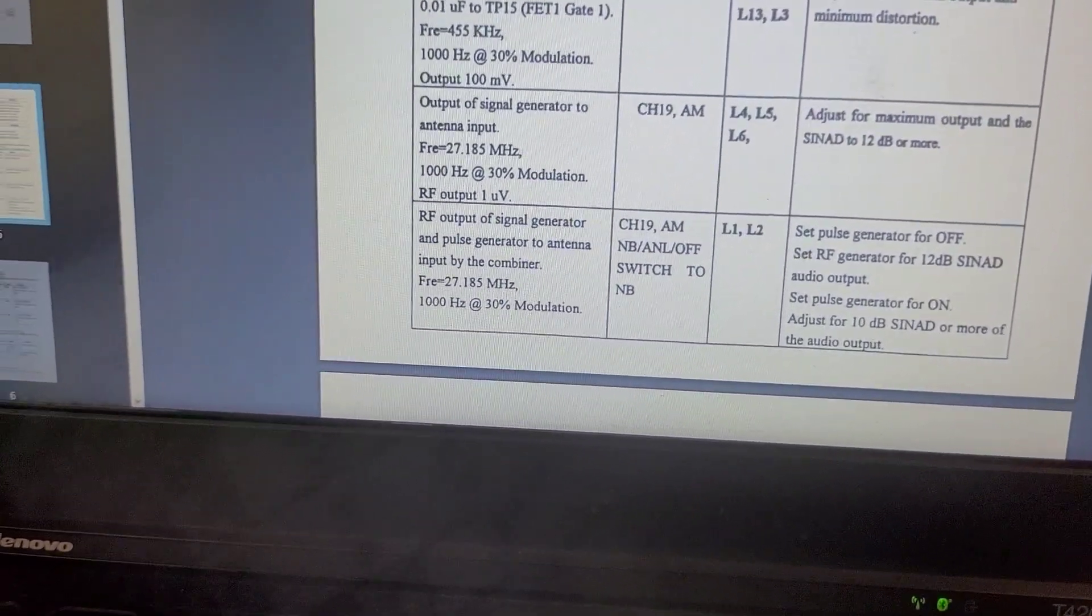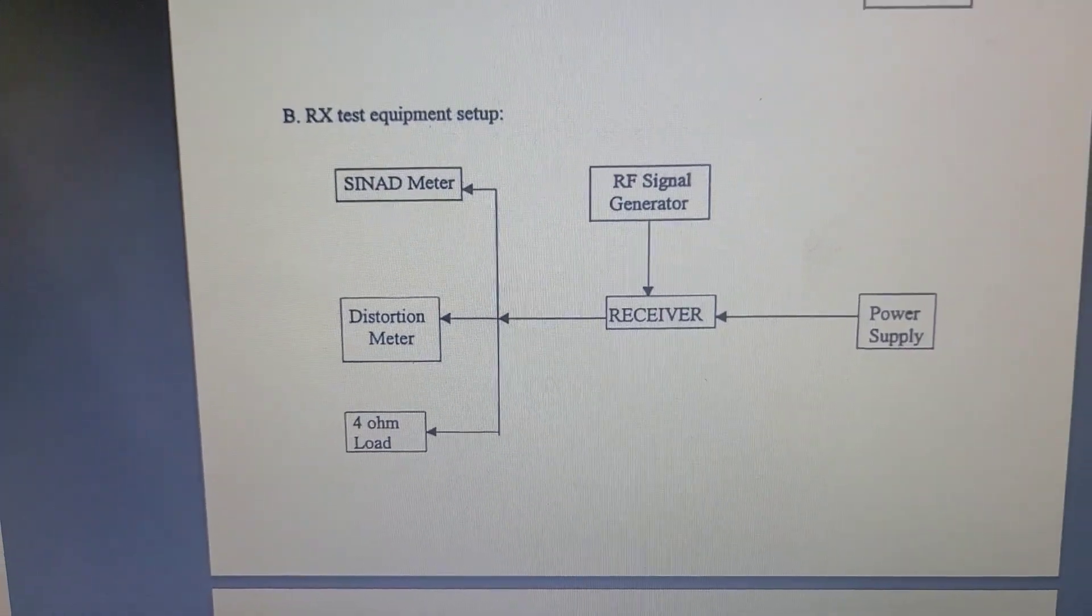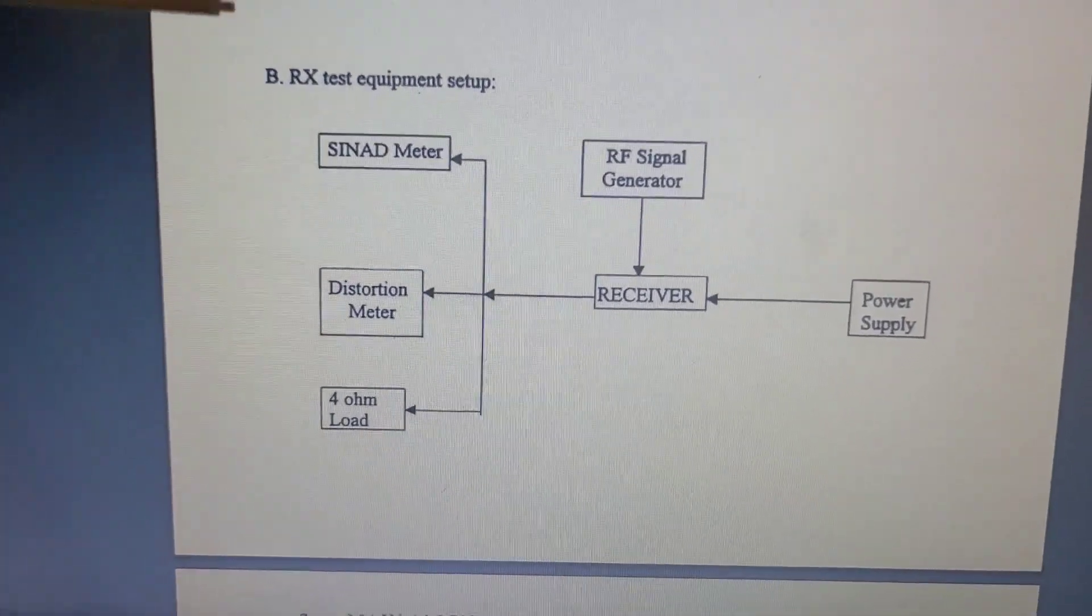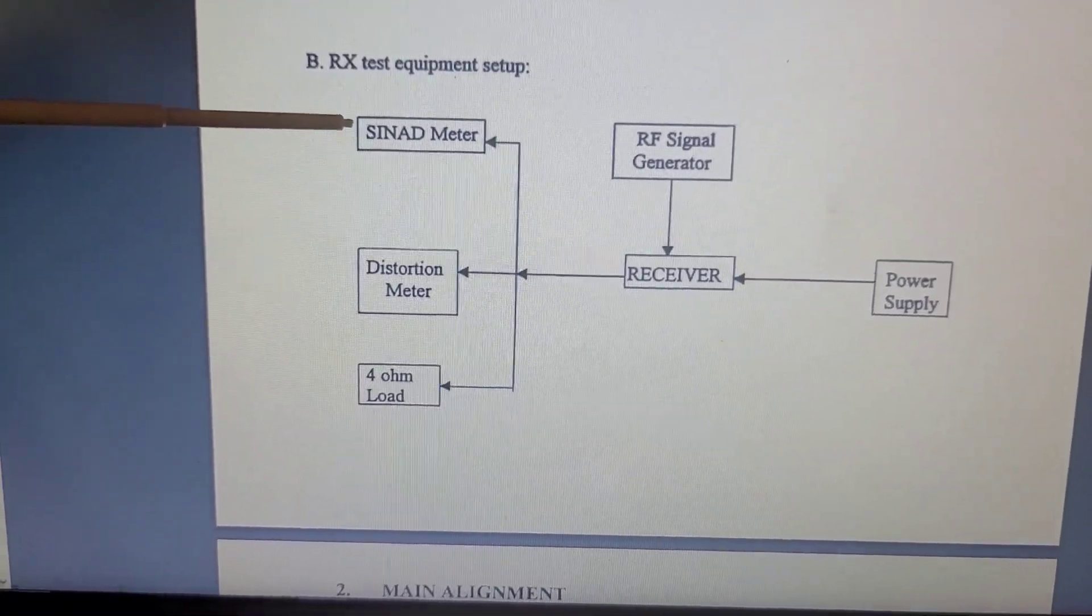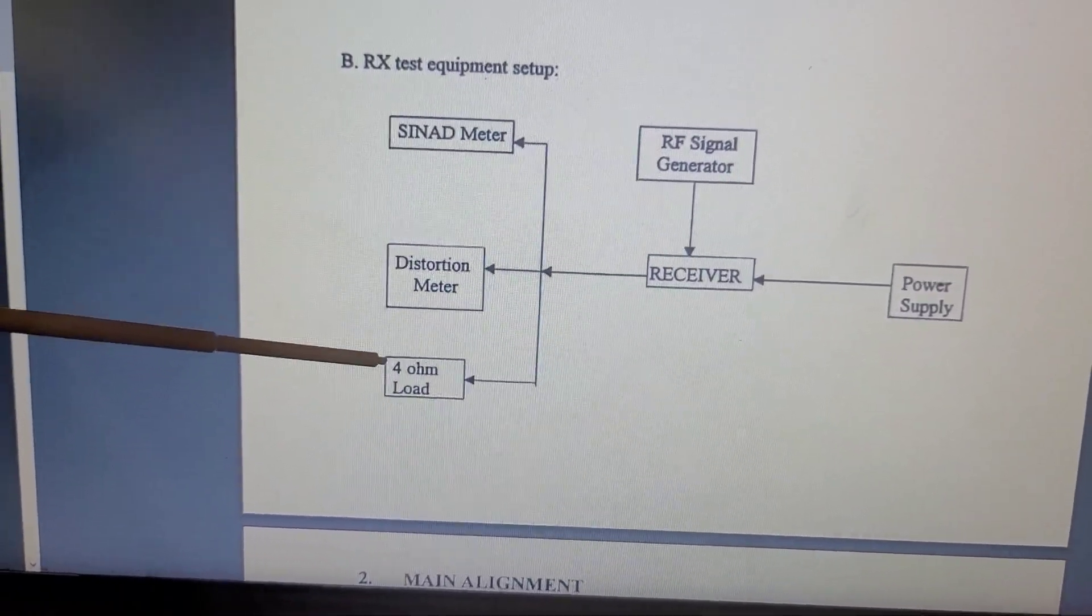This is for the Cobra 148 GTL. Now you see test equipment—you specifically see here SINAD meter and a distortion meter. In this case, because their speakers are four ohm on the GTL, signal generator, obviously the radio and the power supply.